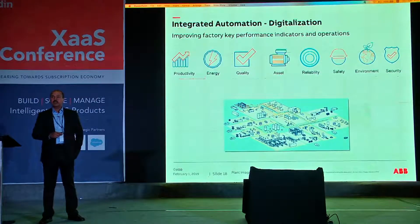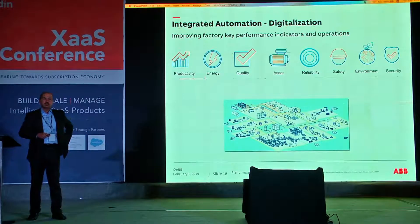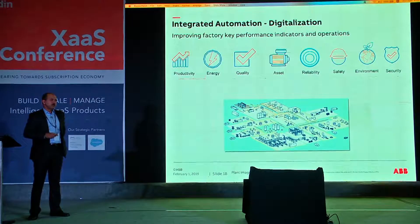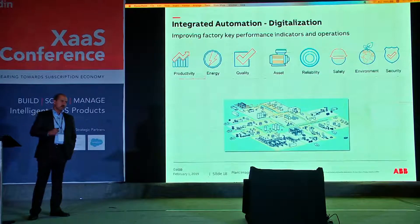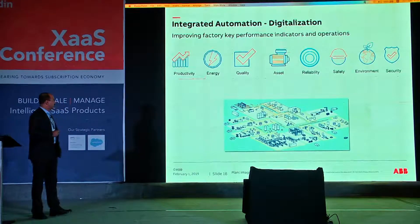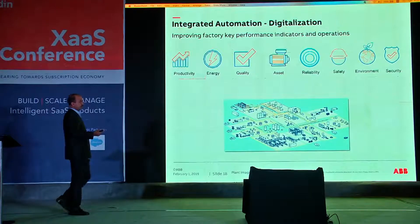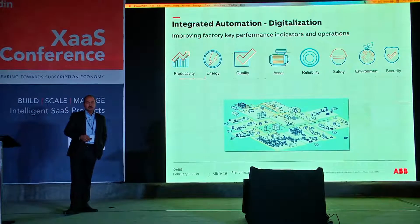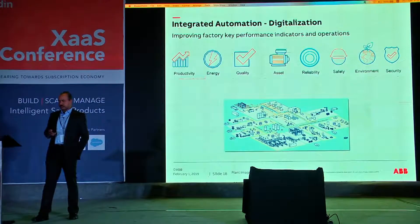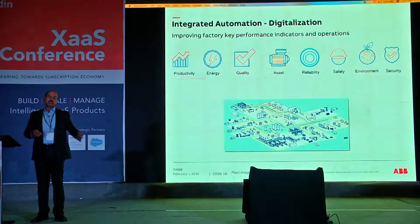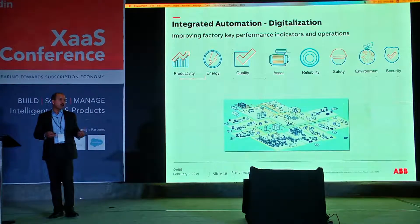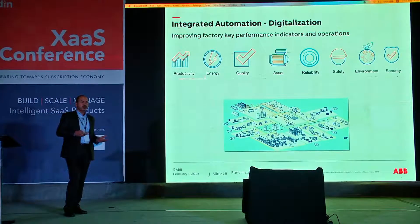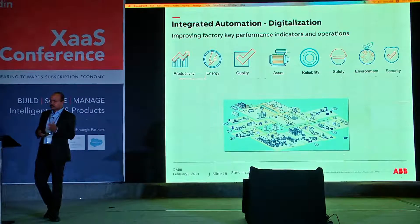In industry, whether automation, robotics, or digitalization, everything is aimed at improving KPIs — productivity, energy, quality, asset health, reliability, and safety — in real time. The industry is now moving towards having these KPIs measured and guaranteed by the provider of software, platform, or infrastructure, with a business model that allows cost recovery based on those guarantees.